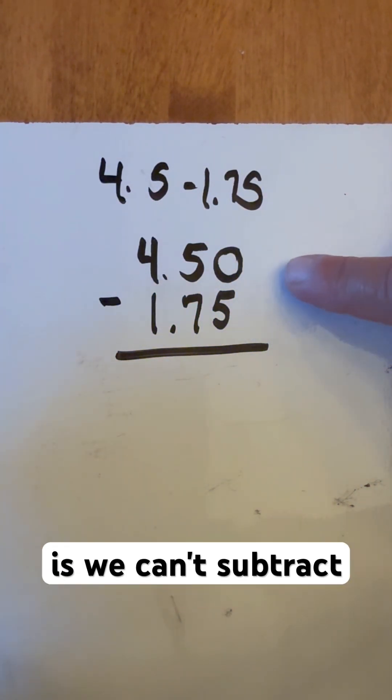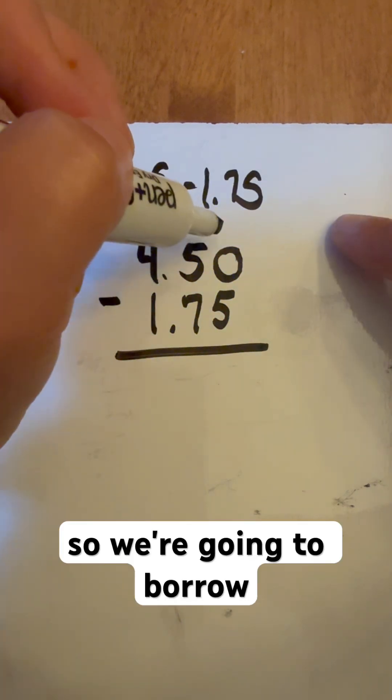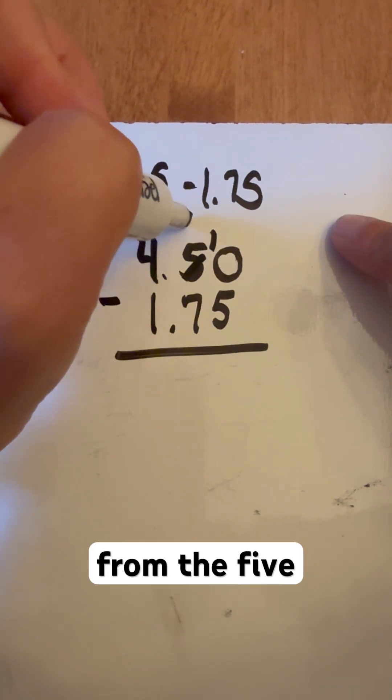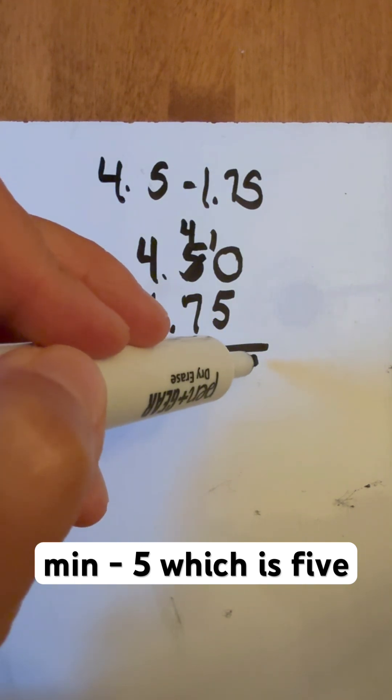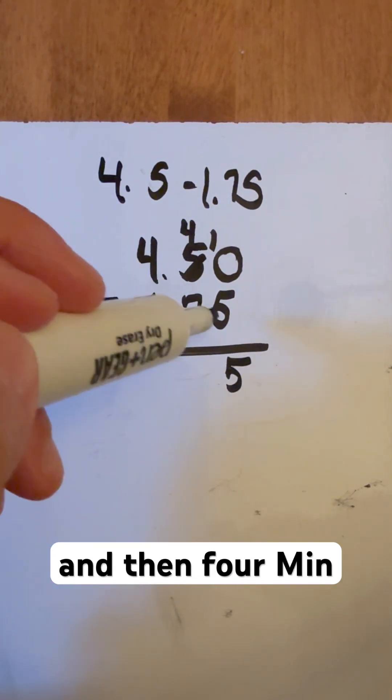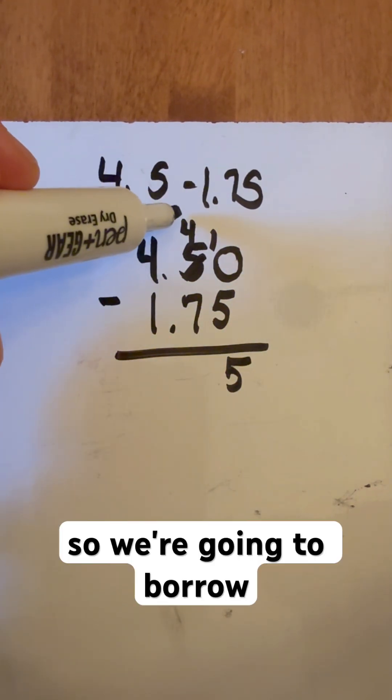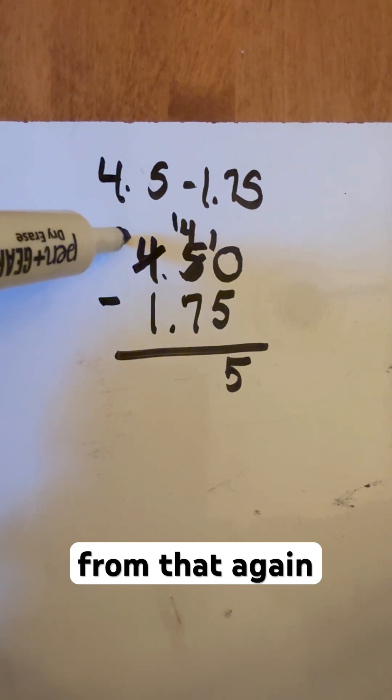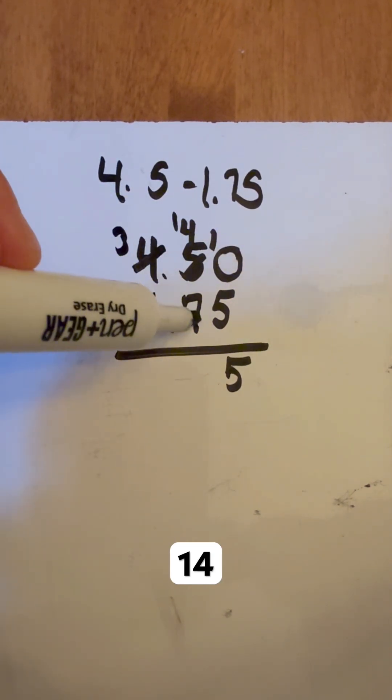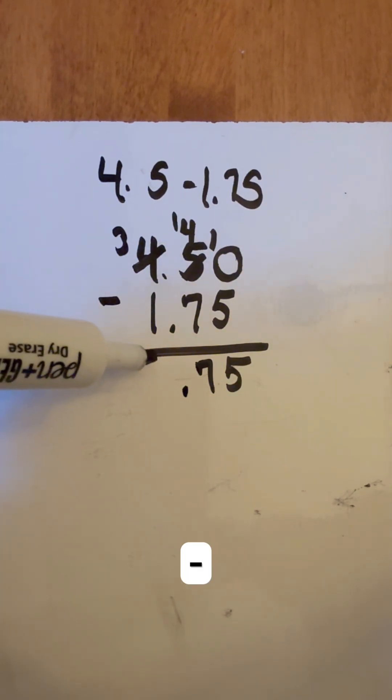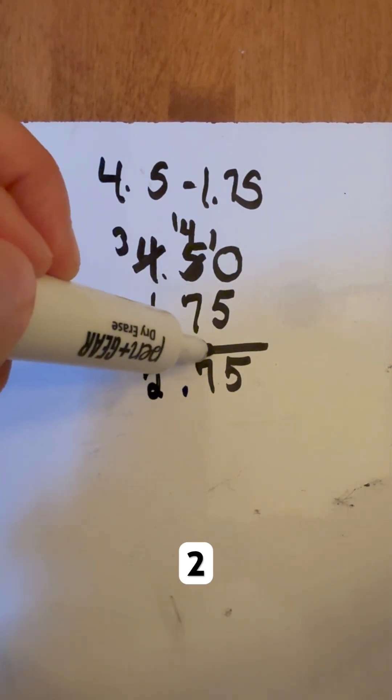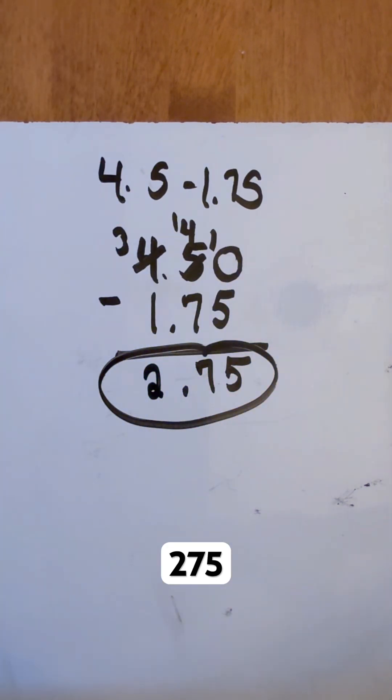Now what we're going to do is we can't subtract 0 minus 5. So we're going to borrow from the 5. That's going to become a 4. And now we're going to do 10 minus 5, which is 5. And then 4 minus 7 we can't do again. So we're going to borrow from that again from here. 14 minus 7 is 7. The decimal's right there. And now I can do 3 minus 1 and get 2. So the answer for this is 2.75.